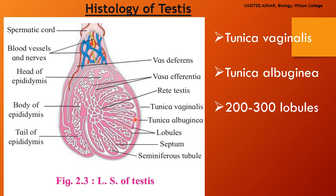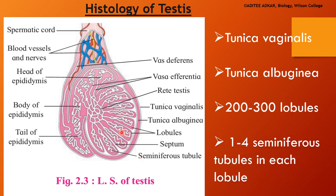The partitions between these lobules are known as the septa. Inside each lobule, we can see tubular structures — these are the seminiferous tubules, those tubules which are going to produce the male gametes or the sperms. Inside every lobule, we will find 1 to 4 seminiferous tubules. Now, how do the seminiferous tubules produce the sperms?